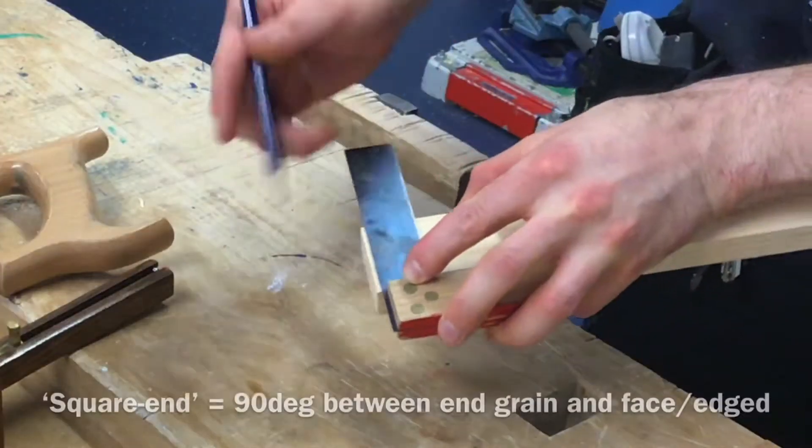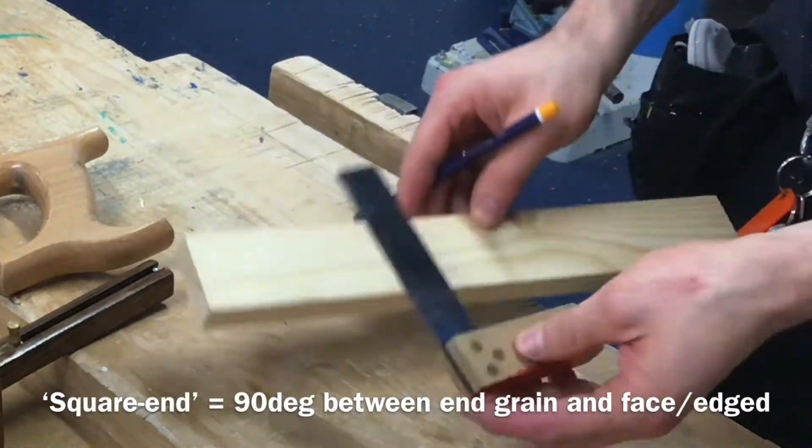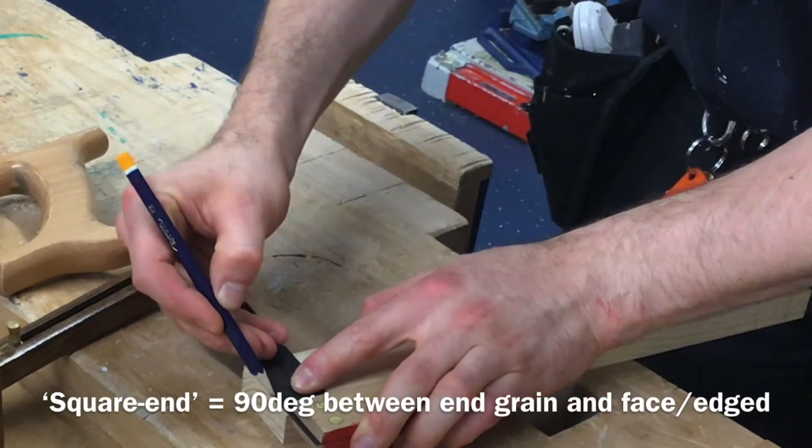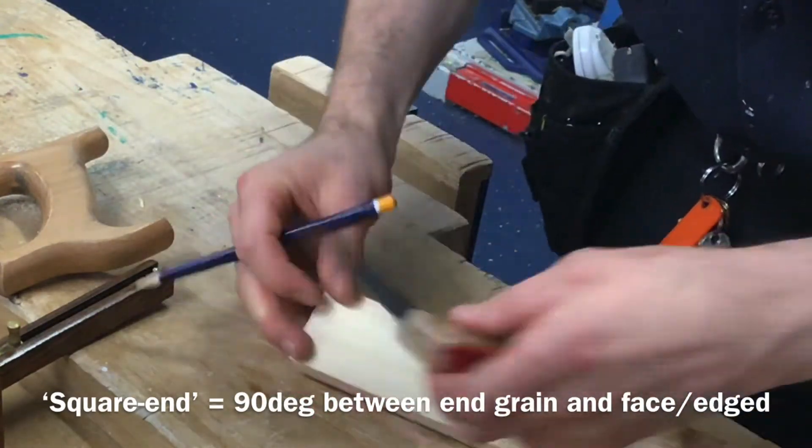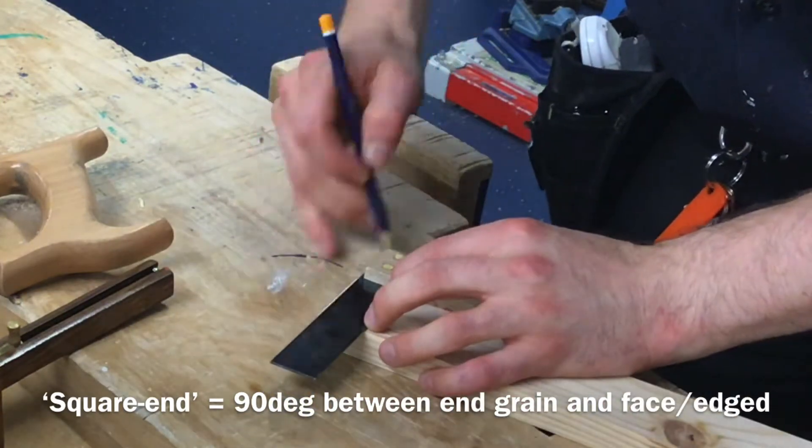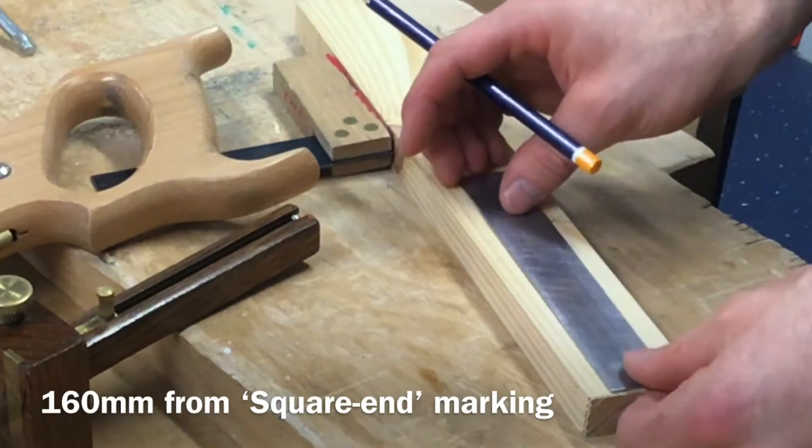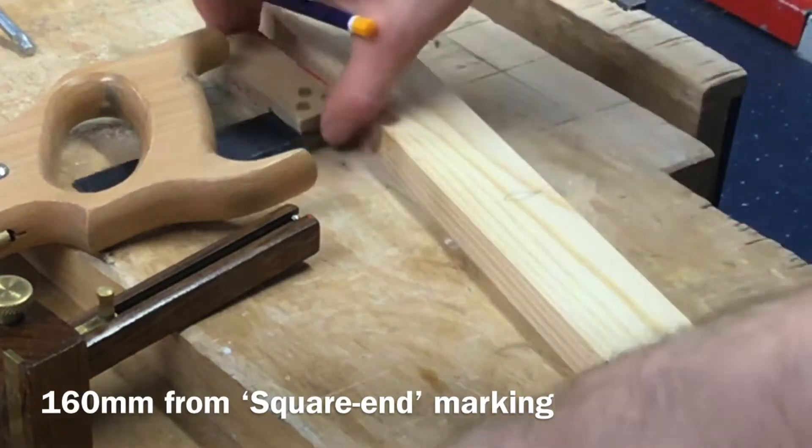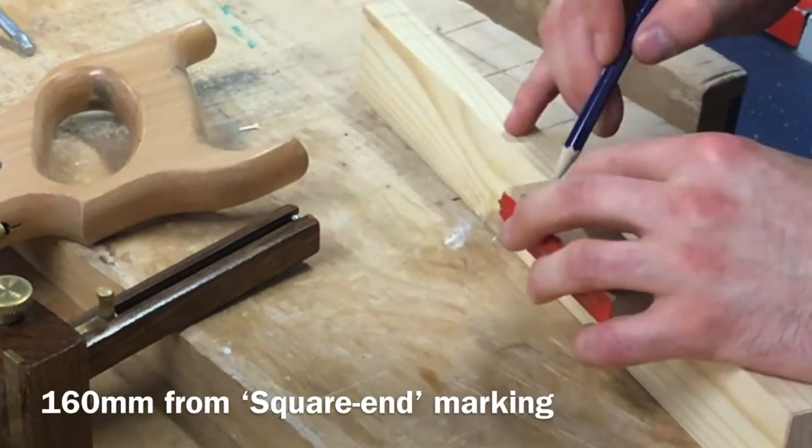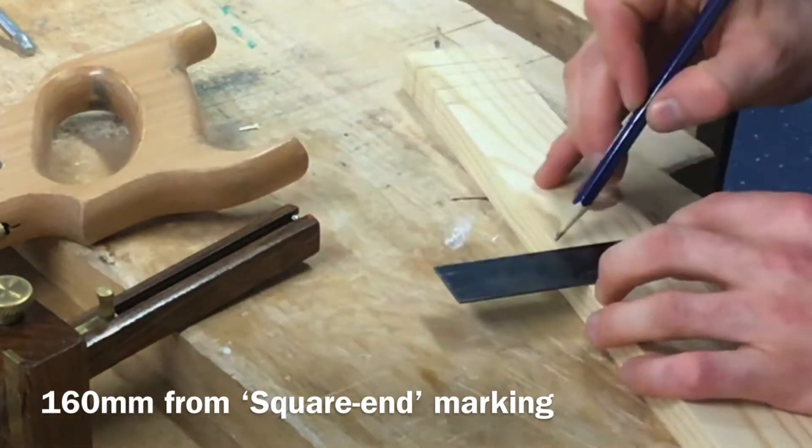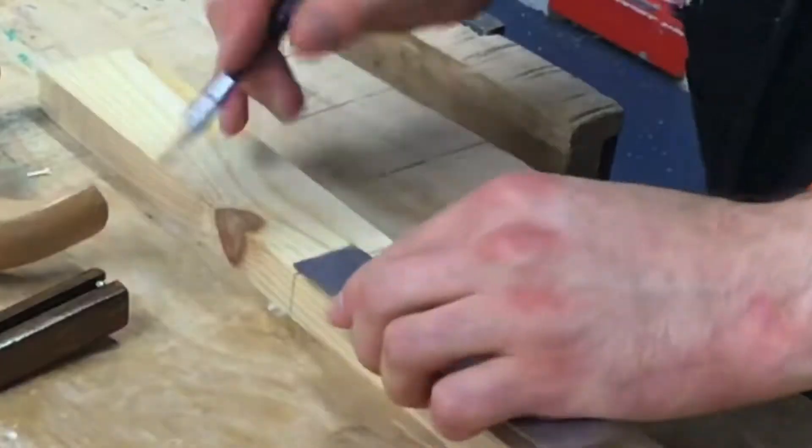Mark one end of my material a square end. That gives me a good starting point for working. That line to go all the way around your material and I'm now going to mark from that line. I'm going to mark my 160mm. Nice sharp pencil to be starting, tri-square flat up against the edge of your material. I'm going to leave a very small gap.